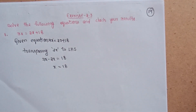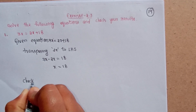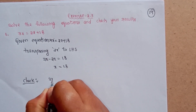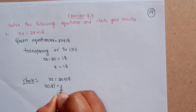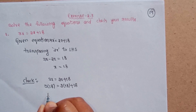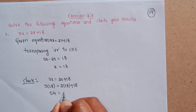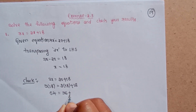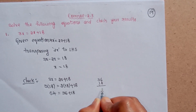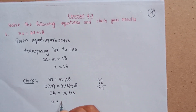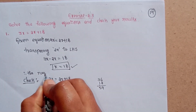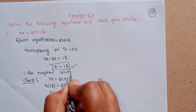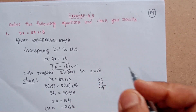Now we need to check the answer. Given 3x equals 2x plus 18, substitute x equals 18: 3 into 18 equals 2 into 18 plus 18. That gives 54 equals 36 plus 18, so 54 equals 54. LHS equals RHS, so the required solution is x equal to 18.